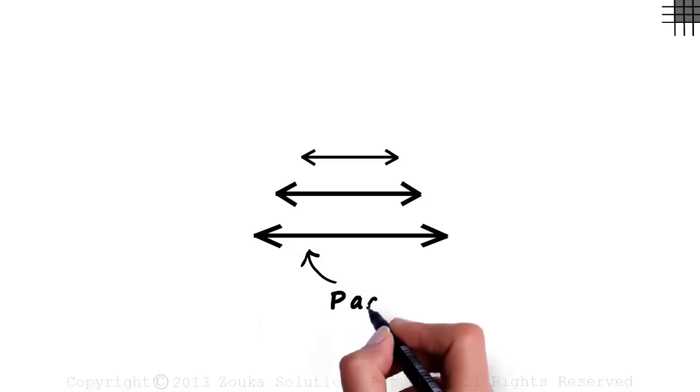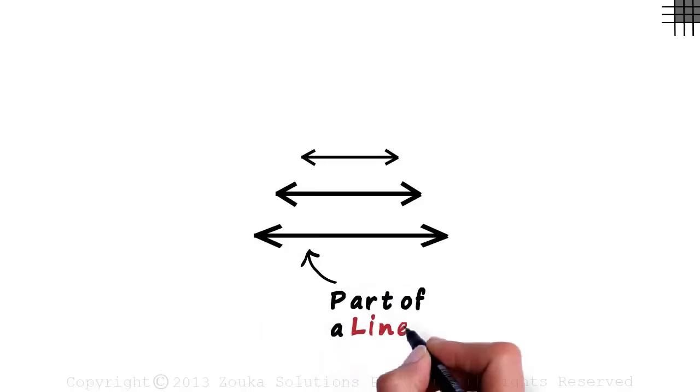We just draw a part of a line. Lines are generally named with lowercase letters. This can be called line P.